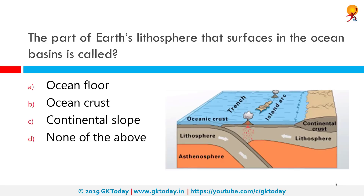The part of Earth's lithosphere that surfaces in the ocean basins is called what? The correct answer is oceanic crust. Oceanic crust is the uppermost layer of the oceanic portion of a tectonic plate. It is composed of the upper oceanic crust with pillow lavas and a dike complex, and the lower oceanic crust composed of troctolite, gabbro, and ultramafic cumulates.